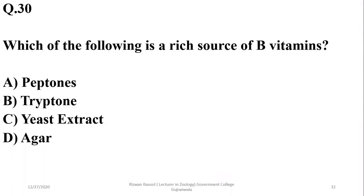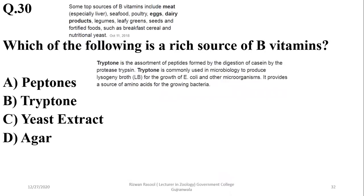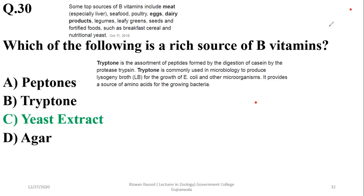Question 29: Which of the following is a rich source of vitamin B? Peptones and tryptones are proteins — tryptone is a fragment of milk protein casein. Yeast extract is the right option, as cereals and nutritional yeast are top sources of vitamin B. So Charlie is the answer.